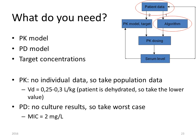What do you need? You need a pharmacokinetic model and a pharmacodynamic model so you can calculate your target concentrations. For the pharmacokinetic model, we don't have individual data yet, so we take population data. The population volume of distribution is 0.25 to 0.3 liters per kilogram body weight; our patient is dehydrated so we take the lower value. For the pharmacodynamics, we have no culture results yet, so we take the worst case — for tobramycin, the worst-case MIC level is 2 milligrams per liter.